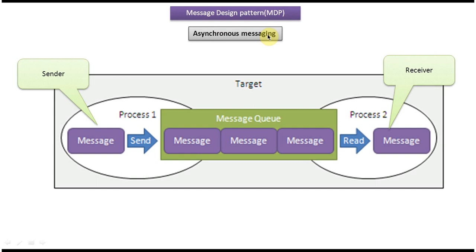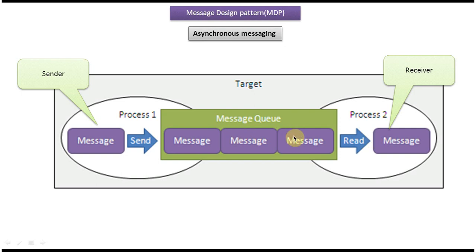So how can we do this? I have put it in a picture. We can see Process 1, which is the sender, Process 2, which is the receiver, and the target, which is the message queue. The message queue is the important one — it holds all the messages. When the sender wants to send a message to the receiver, the sender sends the message to the message queue, and the message queue holds all the messages that the sender sent.